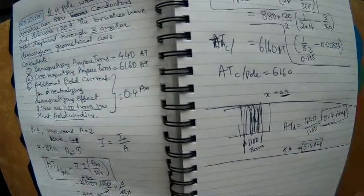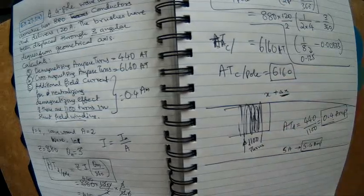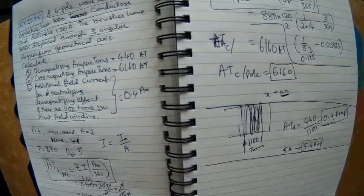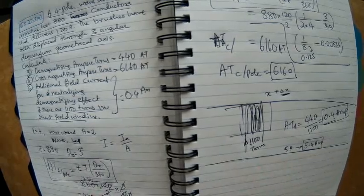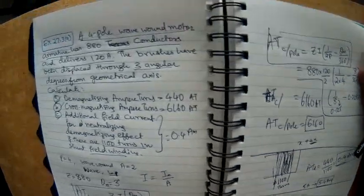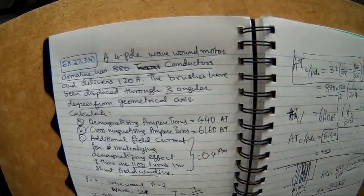You can ask, what about the cross magnetization effect? 6160 ampere turns is causing cross magnetization. As we discussed, we should use the compensating winding for that, but in this question it's not asked so we won't worry about it. I think we'll see more questions.